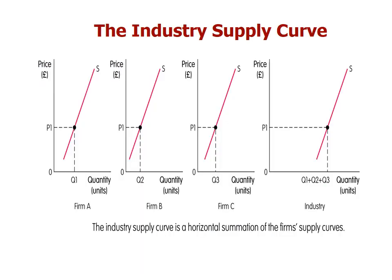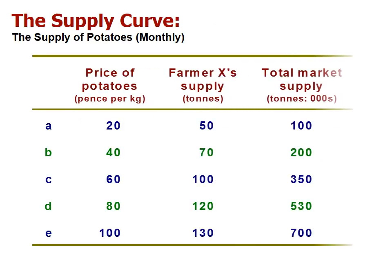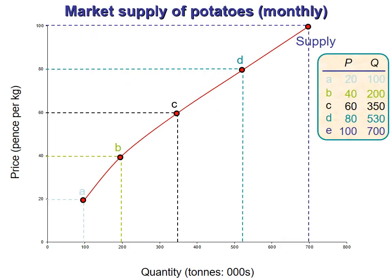You can also have an industry supply curve — just like a market demand curve. This shows the sum of all supply in the industry. We have individual quantities supplied by producers A, B, and C; when we add them up we get the industry supply curve. For example, if we have farmers supplying tomatoes and potatoes, when we sum their individual quantities we get the market supply schedule.